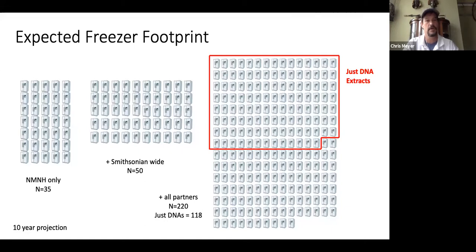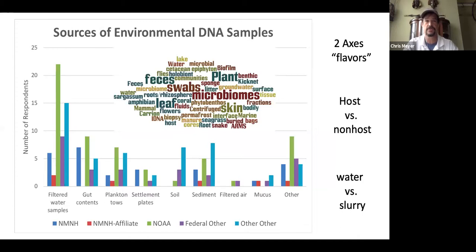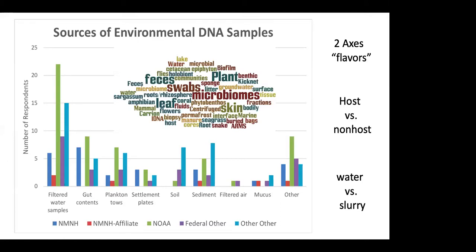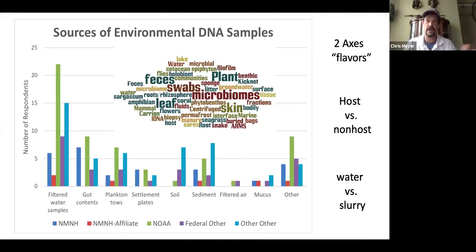The sources of these environmental samples — almost half were basically filtered water samples. We broke out the different affiliates: NMNH, NMNH affiliates meaning the Smithsonian Natural History Museum, NOAA which was a big contributor, other federal partners, and others. Sources included filtered water, gut contents for trophic analyses, plankton tow, settlement plates, invasive species monitoring, our ARMS program, soil, sediment for nutrient dynamics and fluxes, filtered air — a new one — mucus, and others. There's a wide spectrum of sources. In my mind, there are two major axes: those associated with a host versus non-host, and water sample versus a slurry — something where you're grinding up organisms versus shed DNA and non-associated DNA.